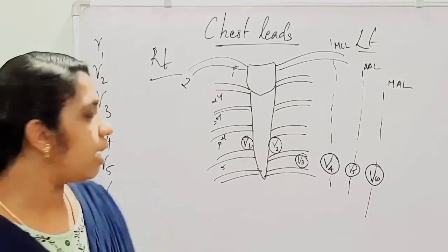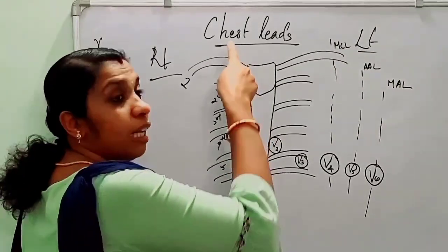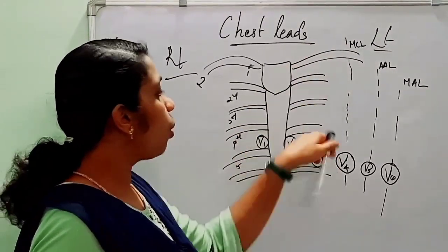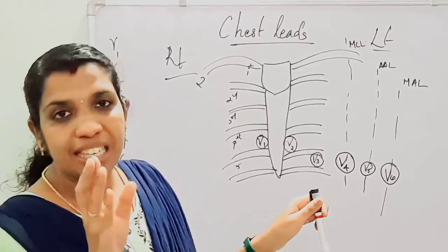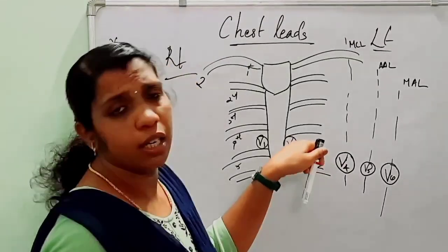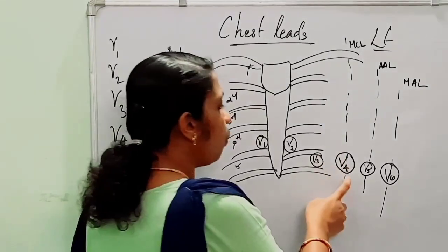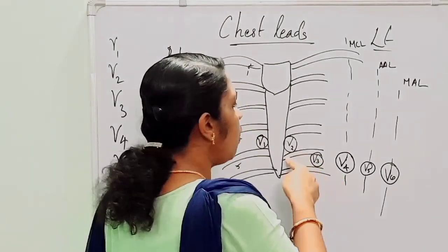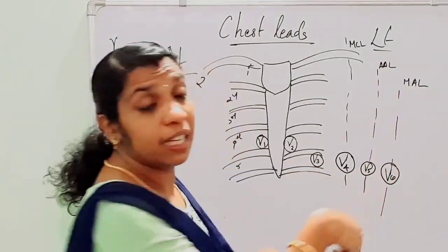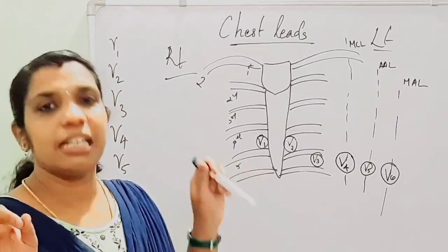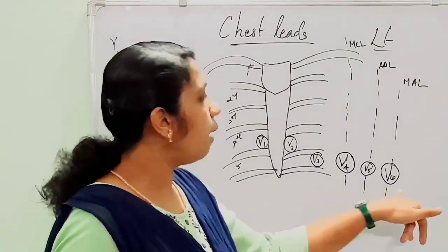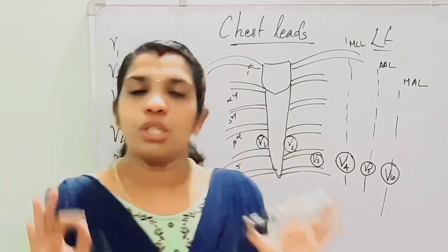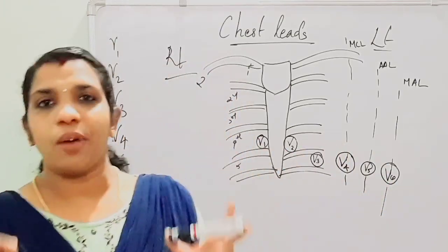To summarize: V1 is placed in the fourth right intercostal space at the right sternal border. V2 is placed in the fourth intercostal space near the left sternal border. V4 is placed in the fifth left intercostal space in the midclavicular line. V3 is placed in between V2 and V4. V5 is in the left fifth intercostal space in the anterior axillary line. V6 is in the left fifth intercostal space in the midaxillary line.